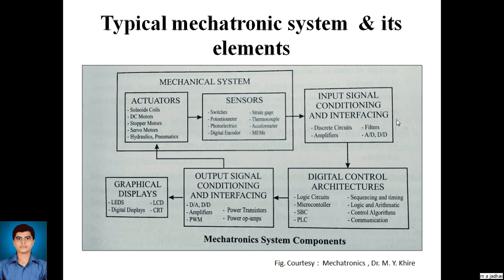As we know, a mechatronic system is used for automation. An automatic system will take some input from the environment, process it, and produce some output. The input will be taken from sensors. A sensor is a sensing device which provides physical change in the environment to the system. Sensors are of different types — those may be strain gauges for measurement of change in force or pressure, and thermocouples used for measuring change in temperature.